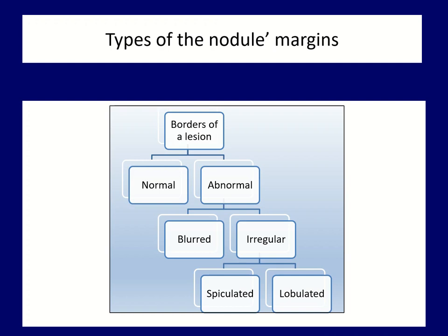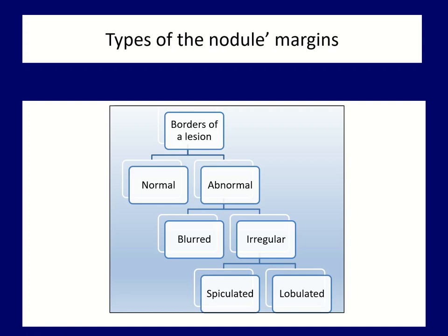Let's turn to nodule borders. This diagram summarizes the classification of nodules according to their borders. A normal border is sharp and has no significant undulations. Two kinds of borders are encountered among abnormal ones: blurred and irregular margins. Blurred borders are not irregular, although they are abnormal. No TIRADS systems include blurred or ill-defined borders among suspicious features, but all do include irregular margins. The latter can be spiculated or lobulated.